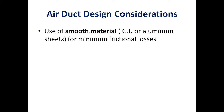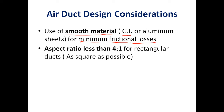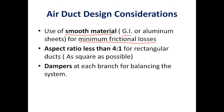Regarding material, the surface finish should be smooth — this is one reason GI and aluminum sheets are preferred for duct construction, as a smooth surface reduces friction losses and hence fan power. The next consideration is aspect ratio, which should be less than 4:1 for rectangular ducts. Dampers are also provided for regulating airflow, directing airflow, and balancing the system pressure of the entire air conditioning system.